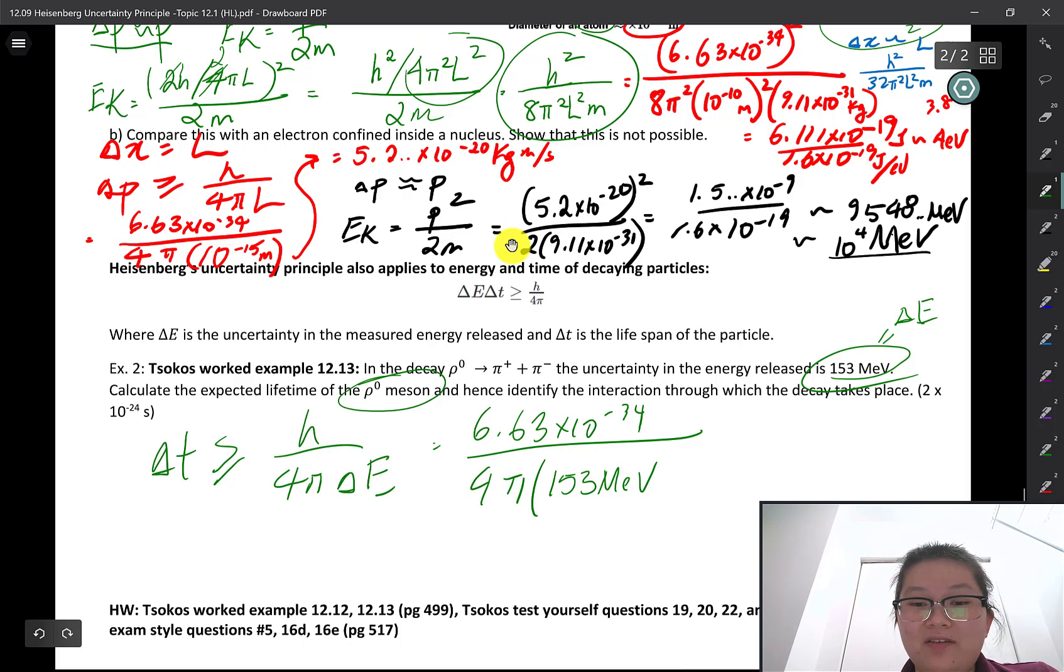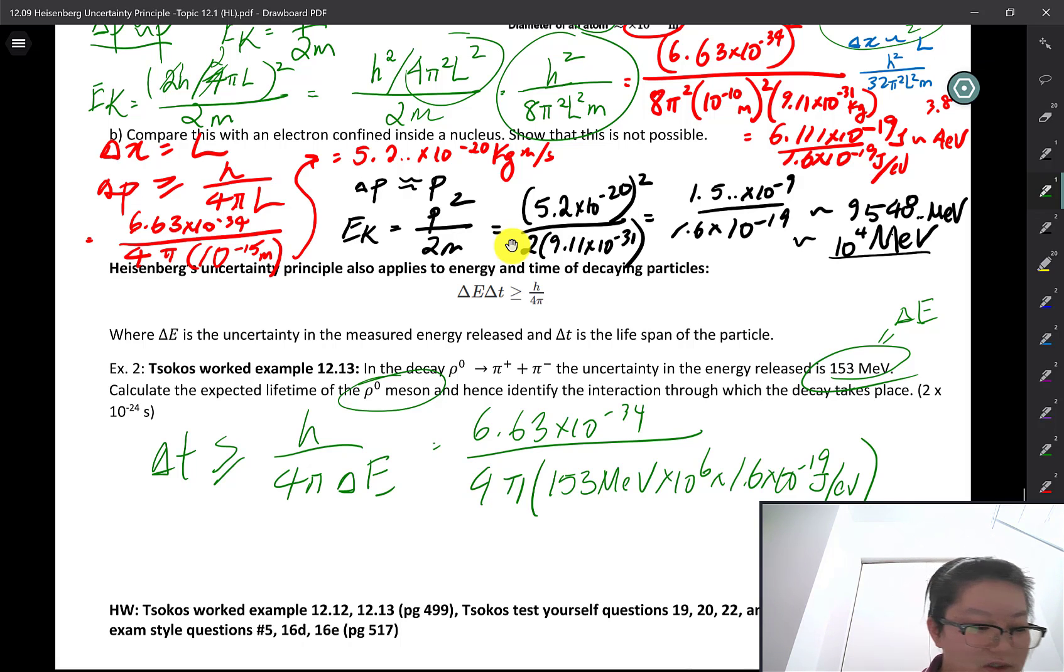So we want to convert that to joules. So times 10 to the power of 6 and 1.6 times 10 to the power of negative 19 joules per electron volt. Okay, so don't forget it's negative electron volts.